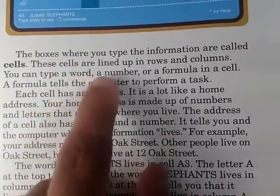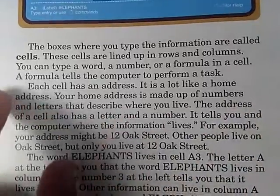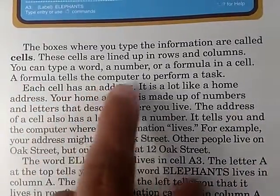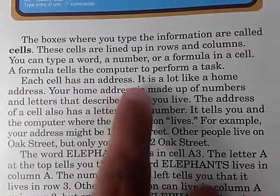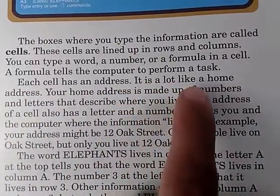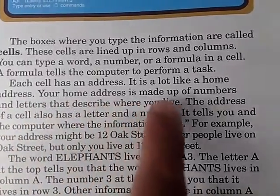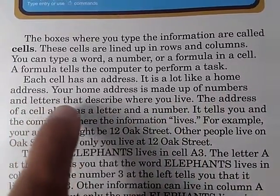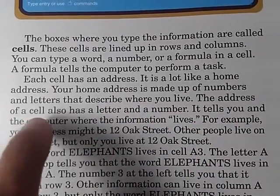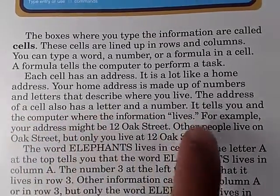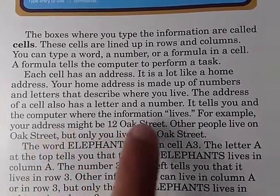You can type a word, a number, or a formula in a cell. A formula tells the computer to perform a task. Each cell has an address — it is a lot like a home address. Your home address is made up of numbers and letters that describe where you live. The address of a cell also has a letter and a number. It tells you where the information lives in the computer.